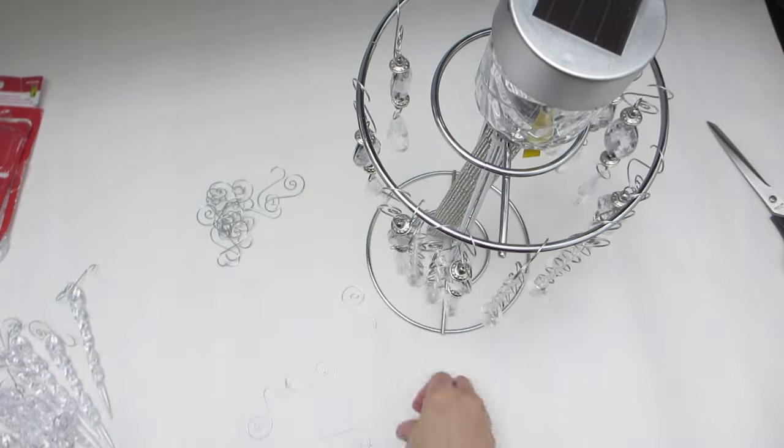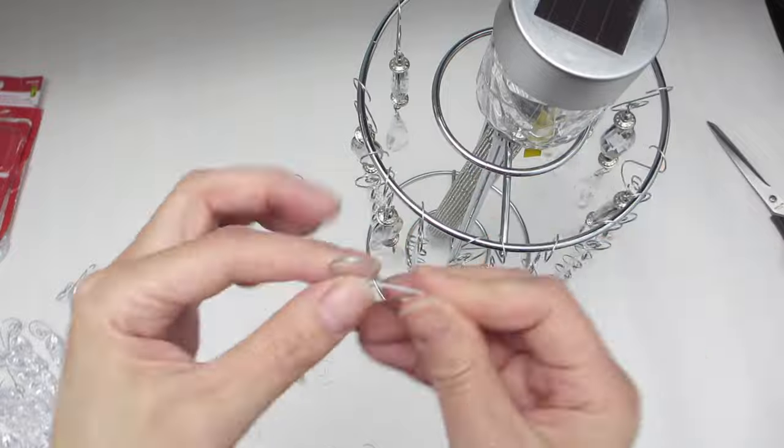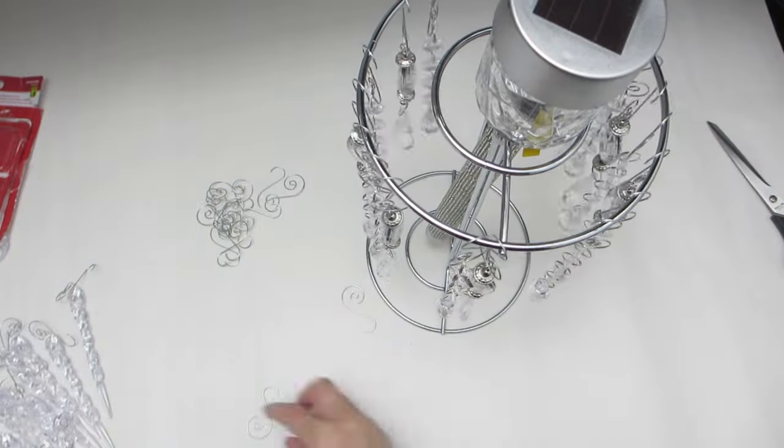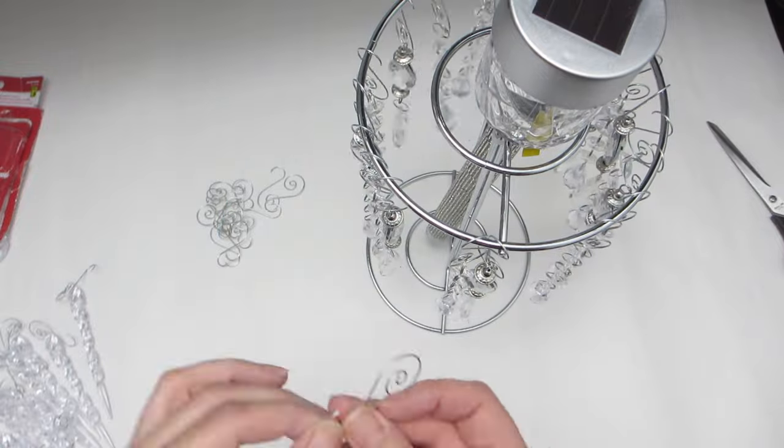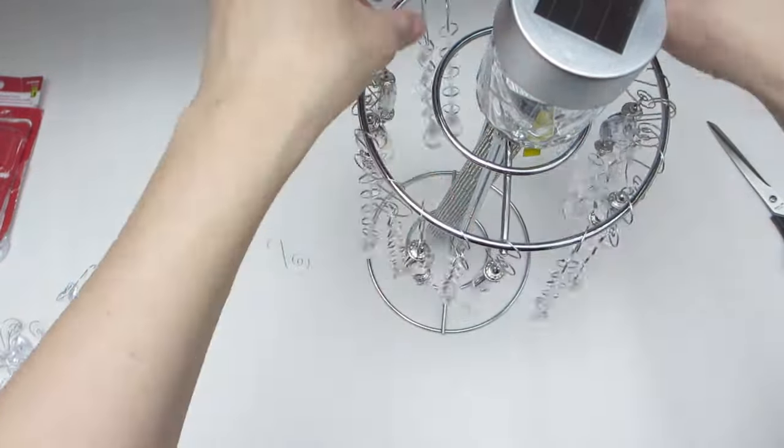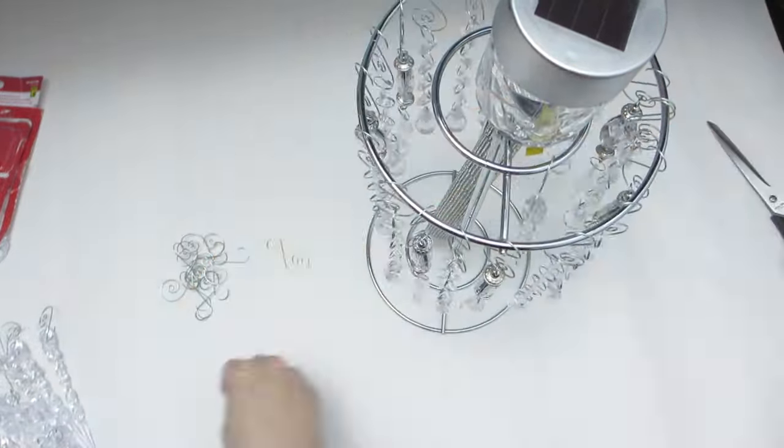And if you happen to have lots of hanging crystals and crystal garlands of different lengths in your stash, you could actually hang longer ones around the inner portion of the paper towel holder so that your lamp has two levels of hanging crystals. I think that would look gorgeous as well.